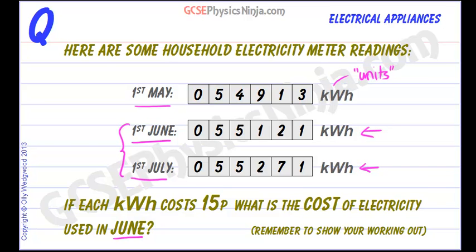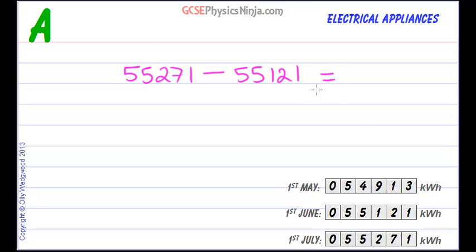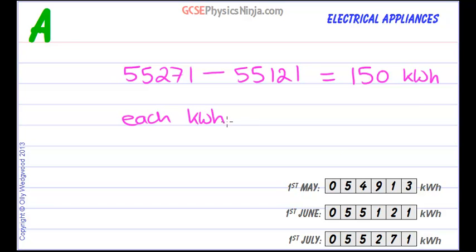Let's work out the number of kilowatt hours used in June. We take 55271 minus 55121, and that gives us 150 kilowatt hours. These are units, and each kilowatt hour costs 15 pence, so let's work in pence — we have 150 kilowatt hours.